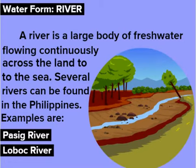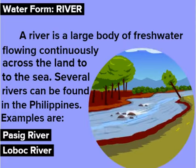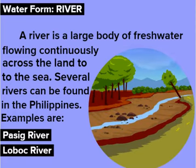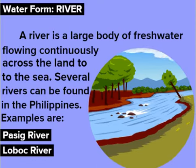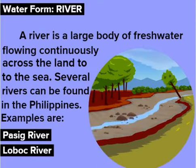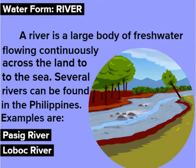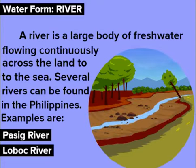River. A river is a large body of fresh water flowing continuously across the land to the sea. Several rivers can be found in the Philippines. Examples are Psyk River and Lobok River.